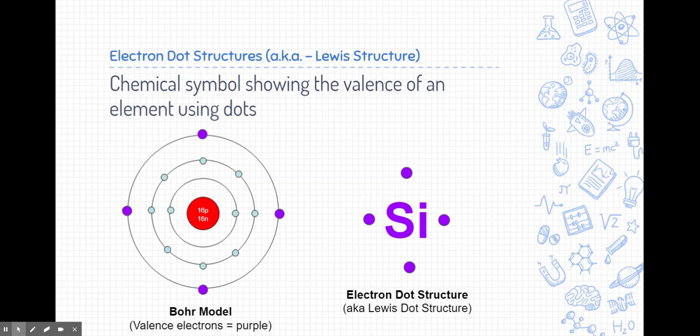But if you take a look here, there's a model on the left known as a Bohr model. And we learned how to draw Bohr models in an earlier unit with the different rings and the electrons. Now, valence electrons are just the electrons in the outermost rings.